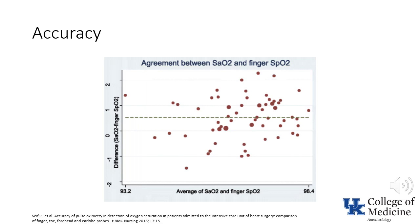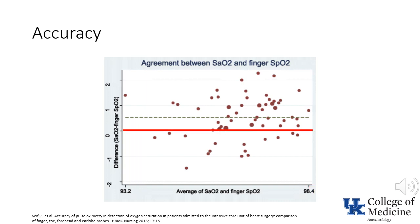So how accurate are the values reported by pulse oximeters? This graph demonstrates the relationship between the saturation as measured by a pulse oximeter and the value for arterial oxygen saturation determined from an arterial blood gas. Note that the range studied is fairly narrow, from 93% to 98%. I have added a red horizontal line which indicates the times when the two values are identical, and the green dashed line indicates the mean difference.